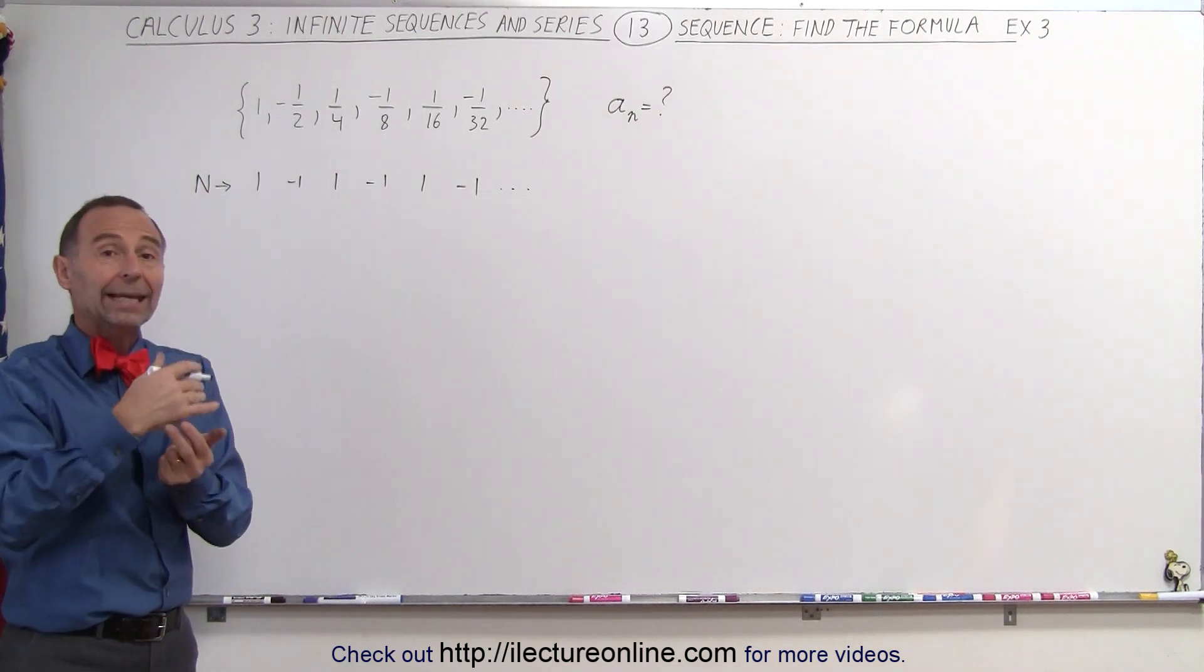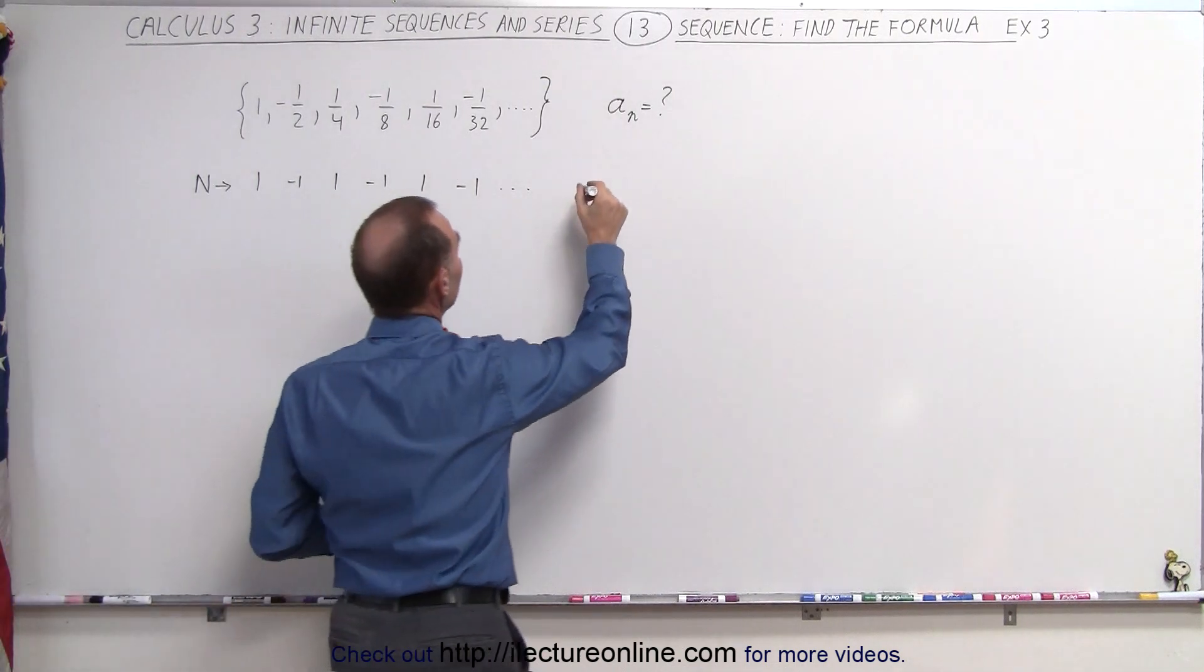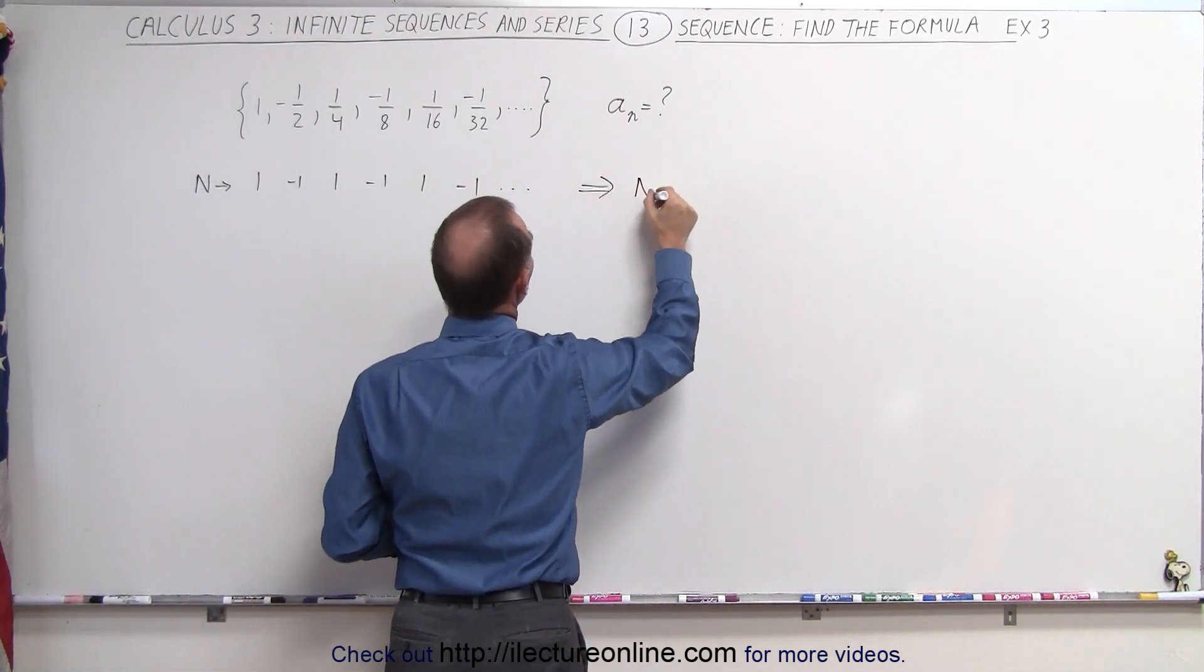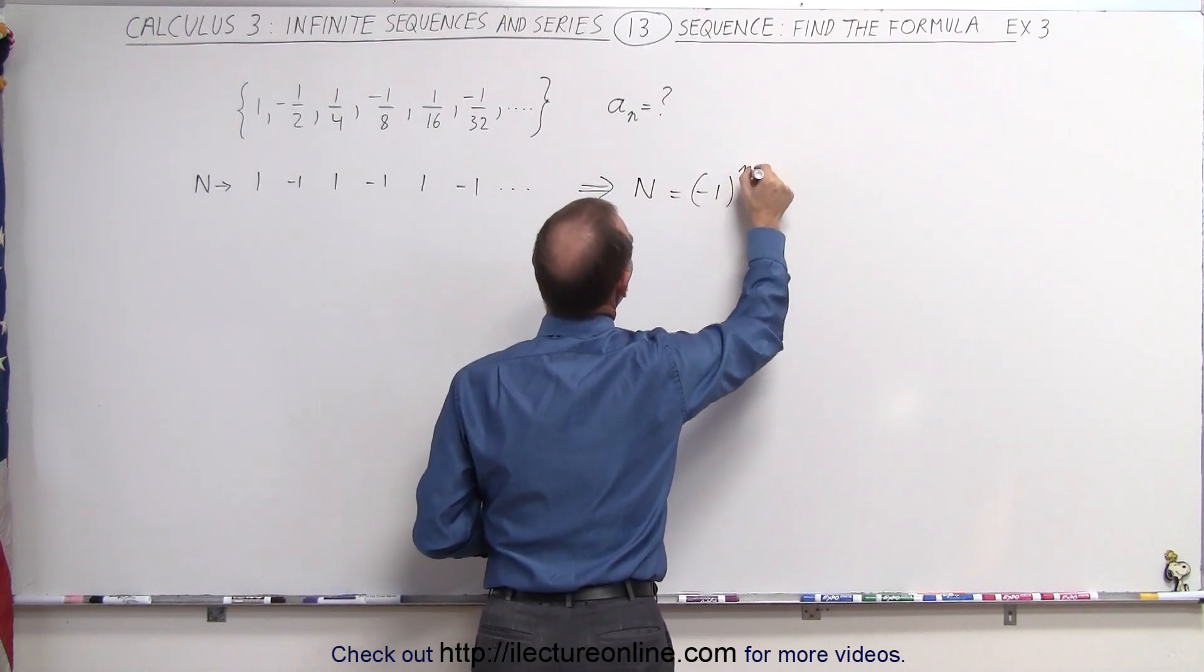So when n is odd, you get a negative one. When n is even, you get a positive one. So that means that the numerator is going to be something like negative one raised to the n power.